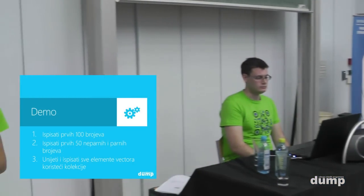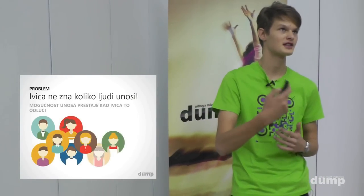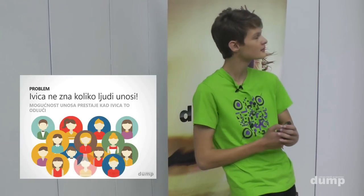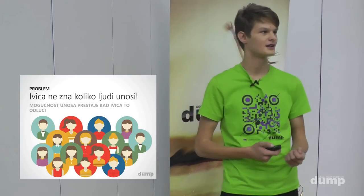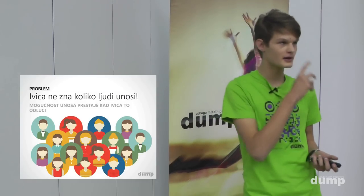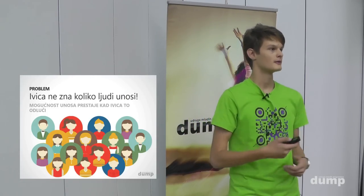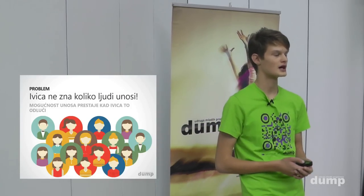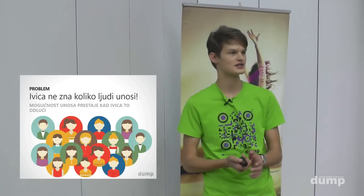Nakon nekog vremena Ivica je otvorio svoj Facebook profil i vidio je jako puno novih zahtjeva za prijateljstvo. Neke su osobe otkazale, mnoge nove su došle i više se nije mogao snaći — nije mu se dalo prebrojavati osobe. Sa for petljom nije mogao riješiti problem jer nije znao broj prijava. Ivica želi da ga program nakon svakog unosa osobe pita želi li unijeti sljedeću osobu.